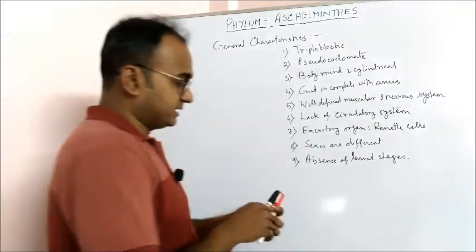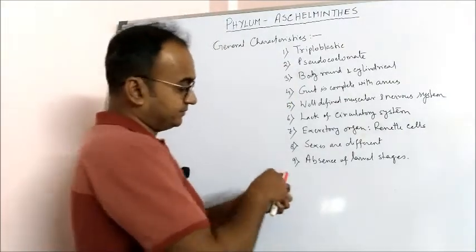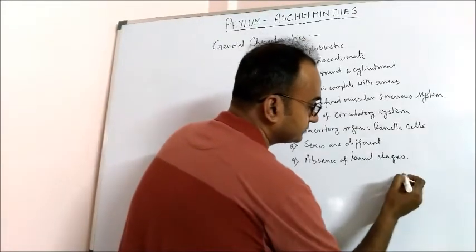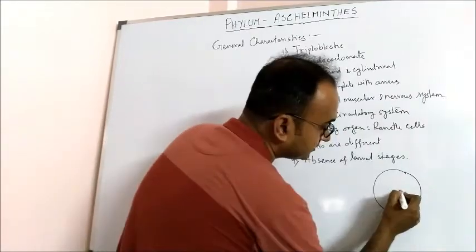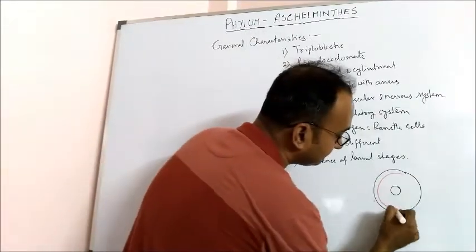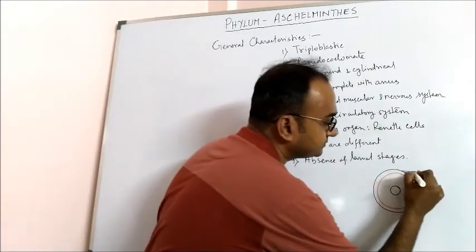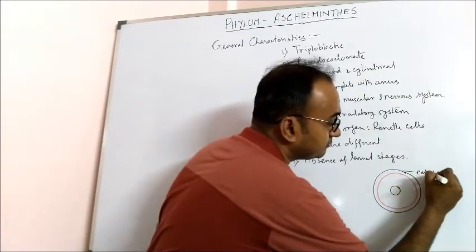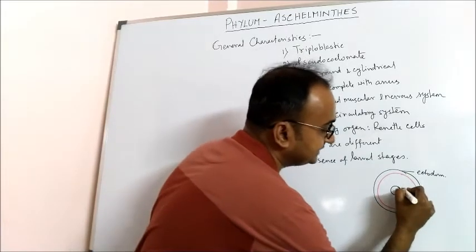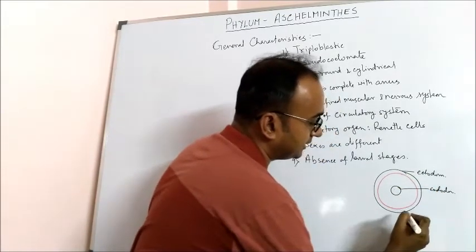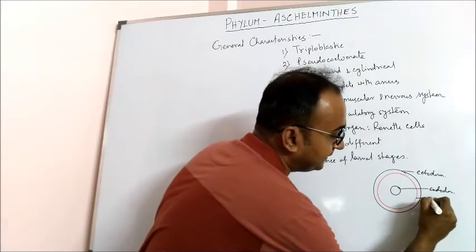Pseudocoelomate means the coelom, the structure of coelom is like this. So you can see this is ectoderm, this is endoderm, and this is mesodermic layer.